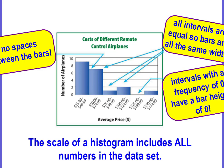Intervals that have a frequency of zero have a bar height of zero. So this looks like it's actually a gap. What this means is that there are no airplanes that cost between $125 and $149.99, so no bar is drawn for this interval.